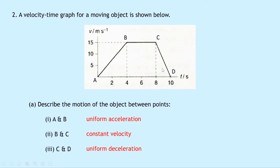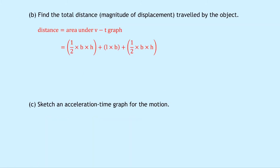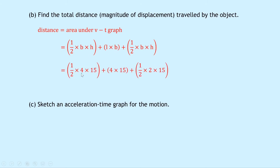We have a triangle, a rectangle and a triangle. We need to work out the area of all three and add them together to get our total distance. That gives us: half times base times height, plus length times breadth, plus half times base times height. Plugging in the numbers: half times 4 times 15, plus 4 times 15, plus half times 2 times 15. Putting that into your calculator gives an answer of 105 metres.